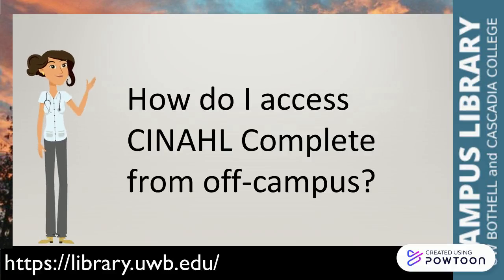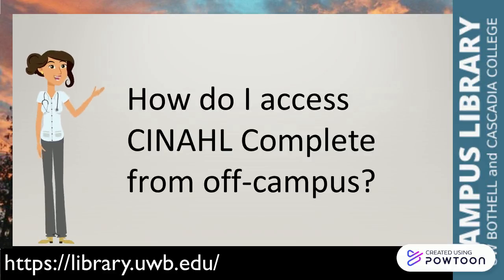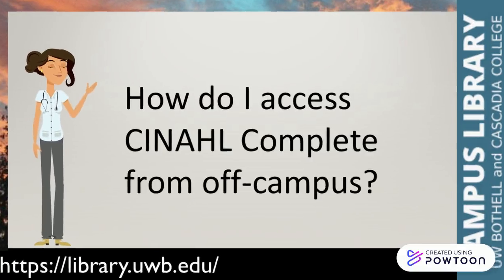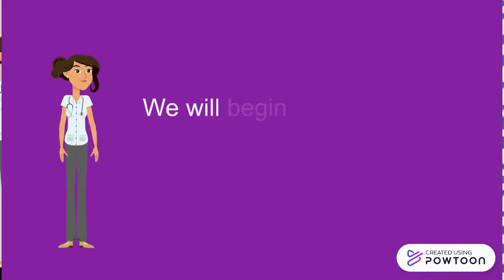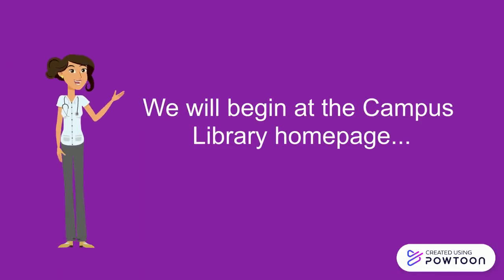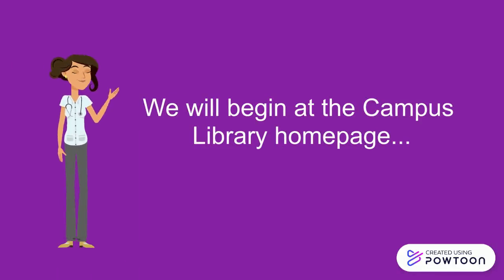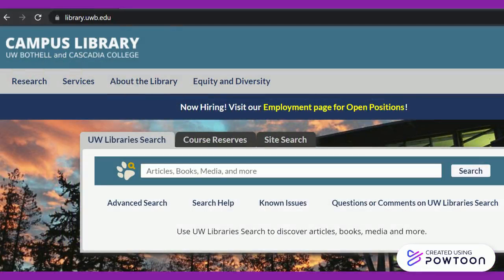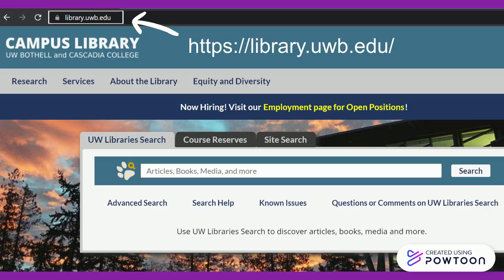How do I access CINAHL Complete from off-campus? We will begin at the Campus Library homepage. To get to the Campus Library homepage, you can search or enter the following URL into your browser bar: library.uwb.edu.